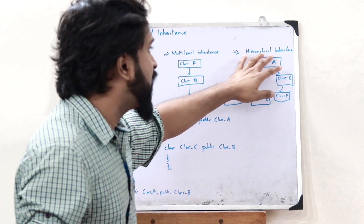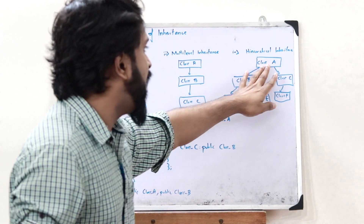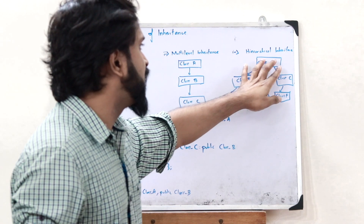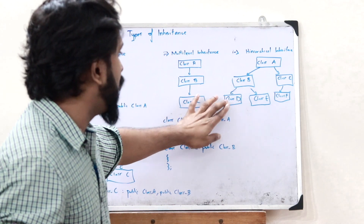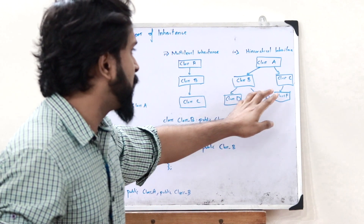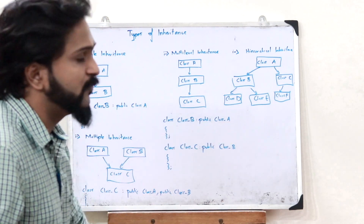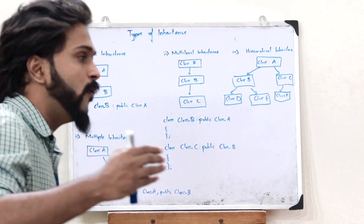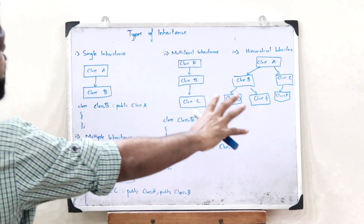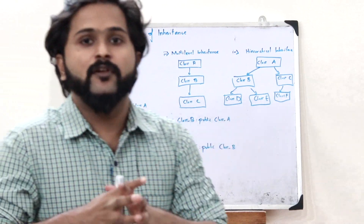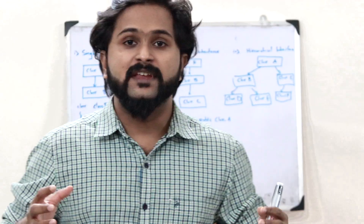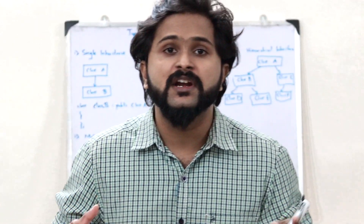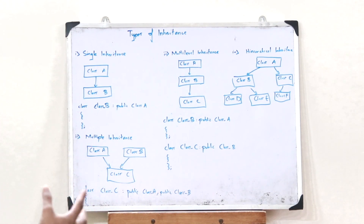In multi-level inheritance, the chain goes across different levels — hence the name. Next, we have hierarchical inheritance, where a hierarchical architecture is formed. From one single base class, properties are inherited onto multiple subclasses, forming a hierarchy. The combination of all these types together is referred to as hybrid inheritance — when we incorporate multiple types of inheritance together, we get hybrid inheritance. These are the different types of inheritance in C++.